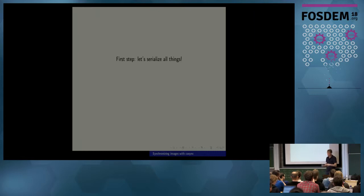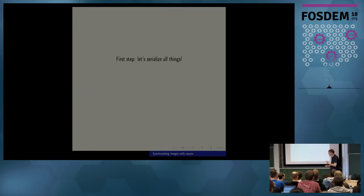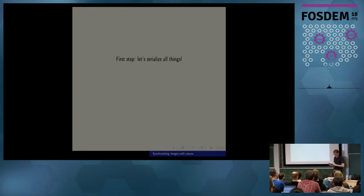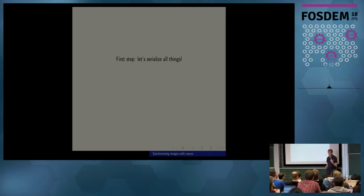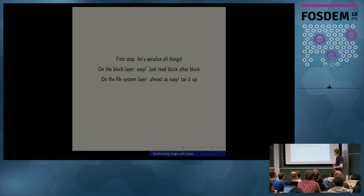Generally tar is not very good at reproducibility, because in tar the files inside directories appear in the order that the file system decides to push out, and that might depend on many factors including hash algorithms. So anyway, I call my serialization format catar — all the things I came up with start with the two characters C and A. The catar thing is essentially just tar. However, it's reproducible and well-defined. Secondly, it's random access, so if you want to access some file at the end of the serialization you don't have to read all the beginning like you do for tar. On the block layer, easy — just read block after block. On the file system layer, almost as easy — just tar it up.